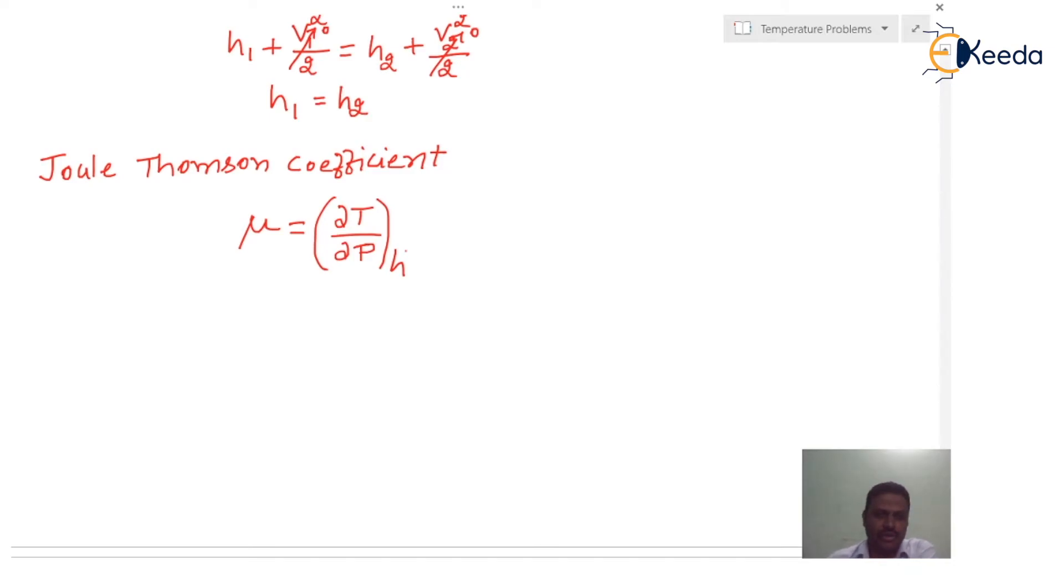Here, the Joule-Thomson coefficient is the ratio of change in temperature with pressure at constant enthalpy. There may be three conditions: the first case is μ < 0, μ = 0, and μ > 0.